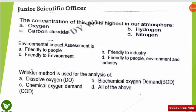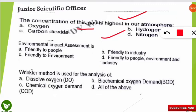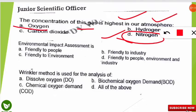The next question: the concentration of which of the following gases is highest in our atmosphere? The correct option is D — nitrogen has the highest concentration in our atmosphere, at around 78%, followed by oxygen at 21%.